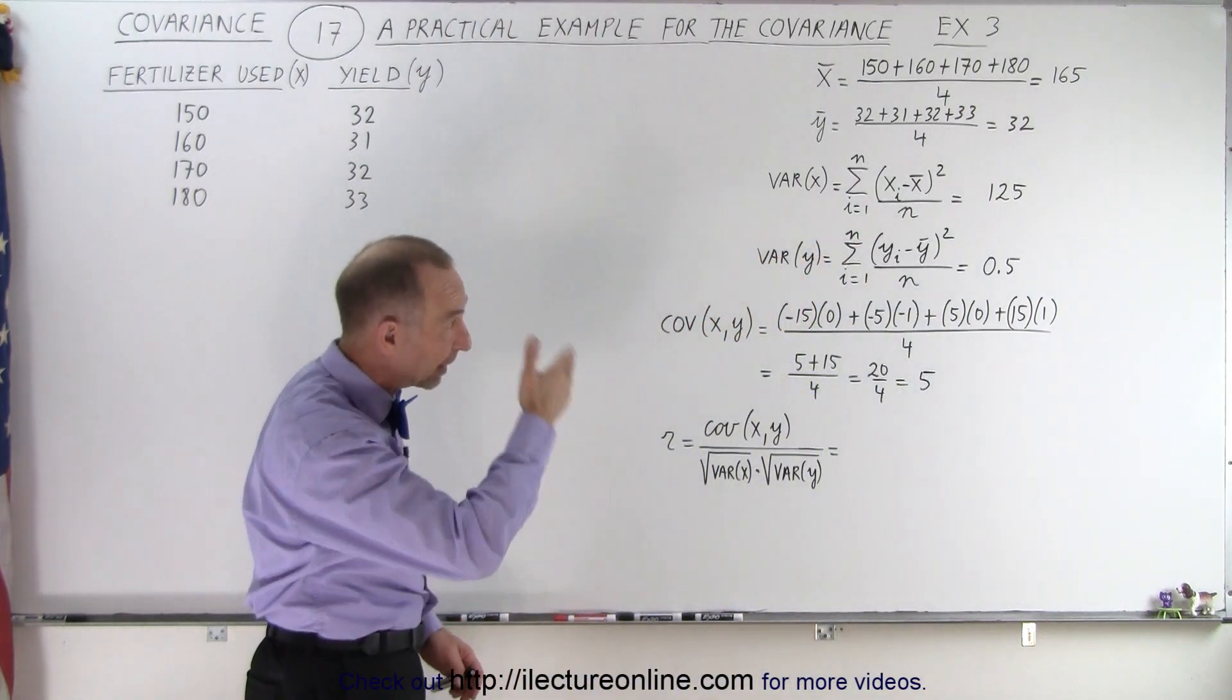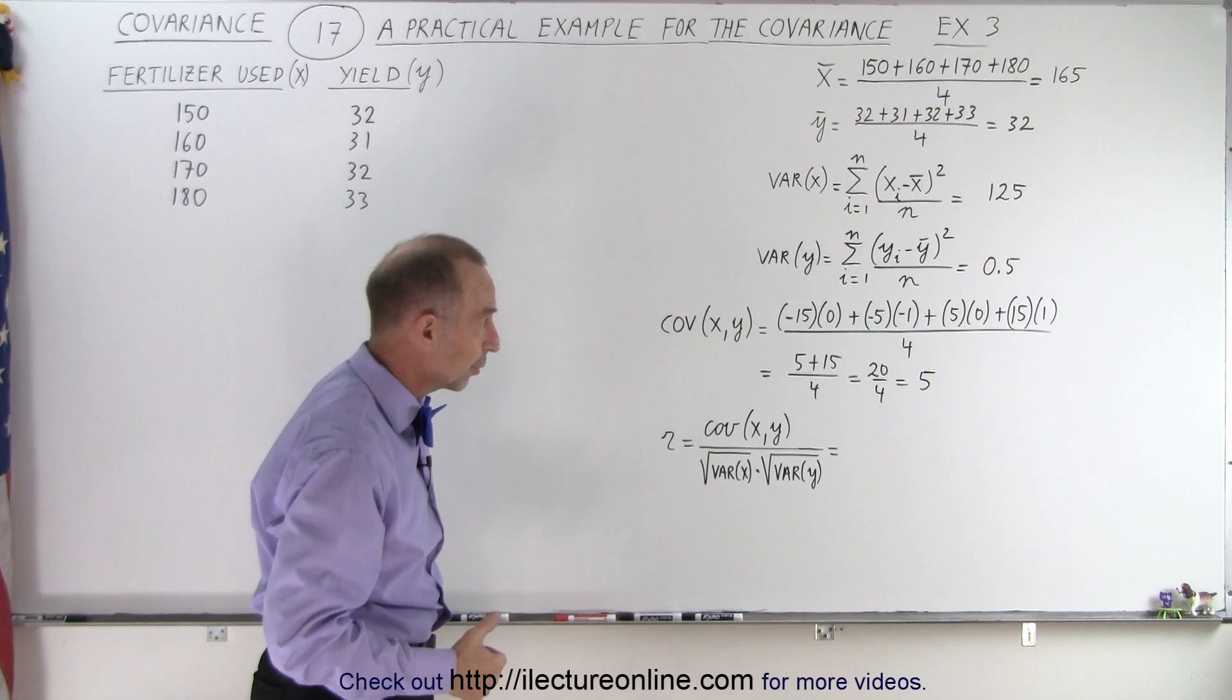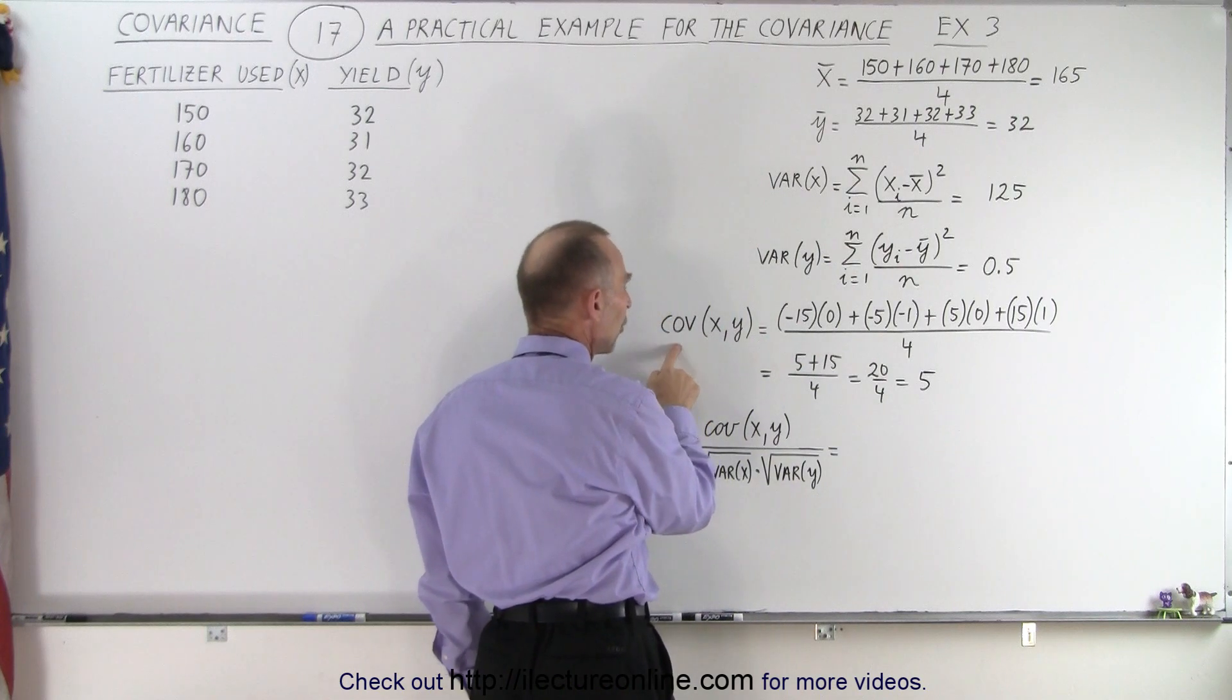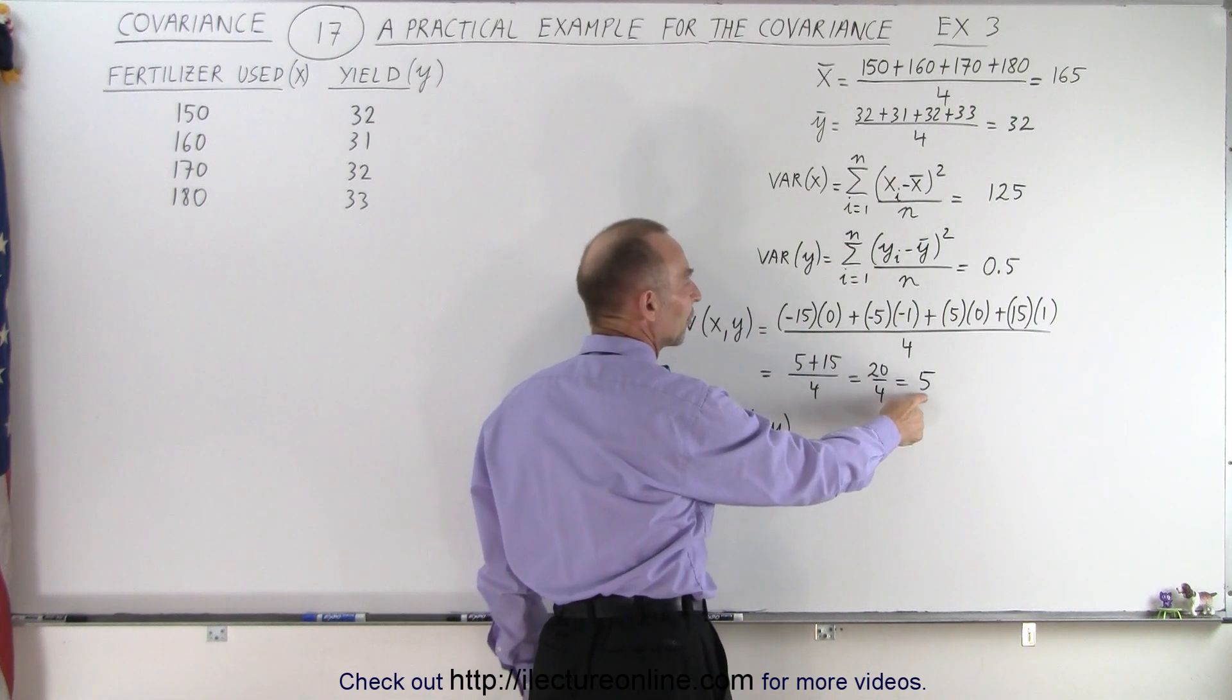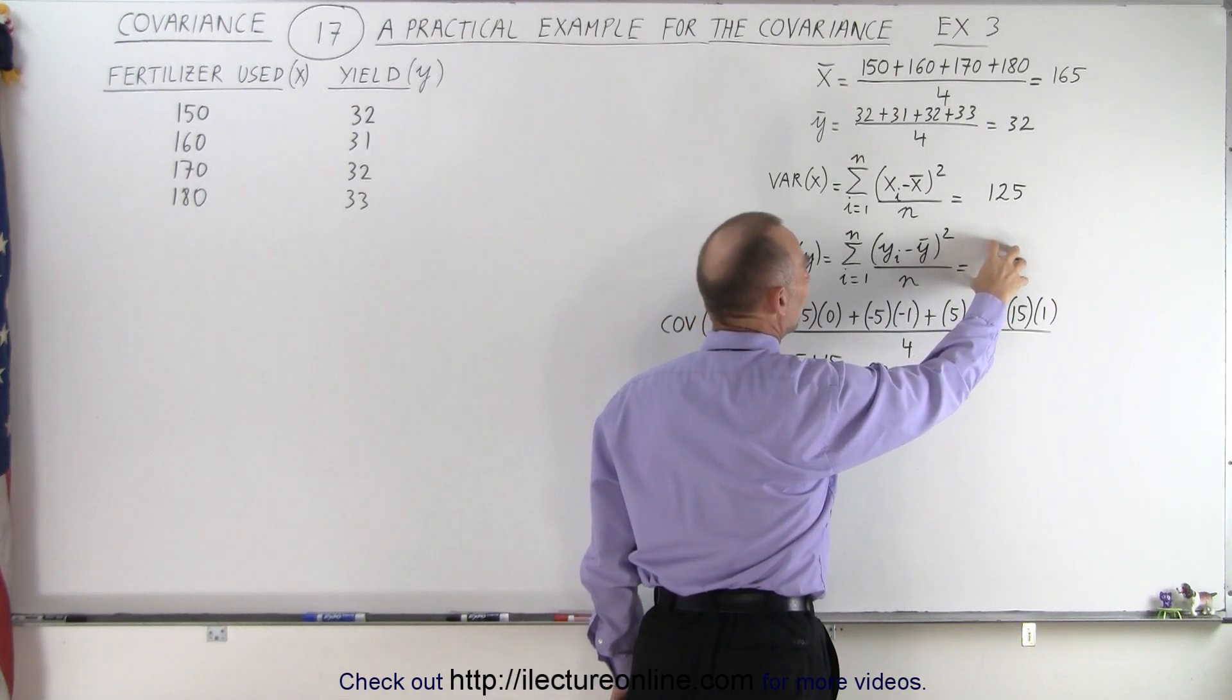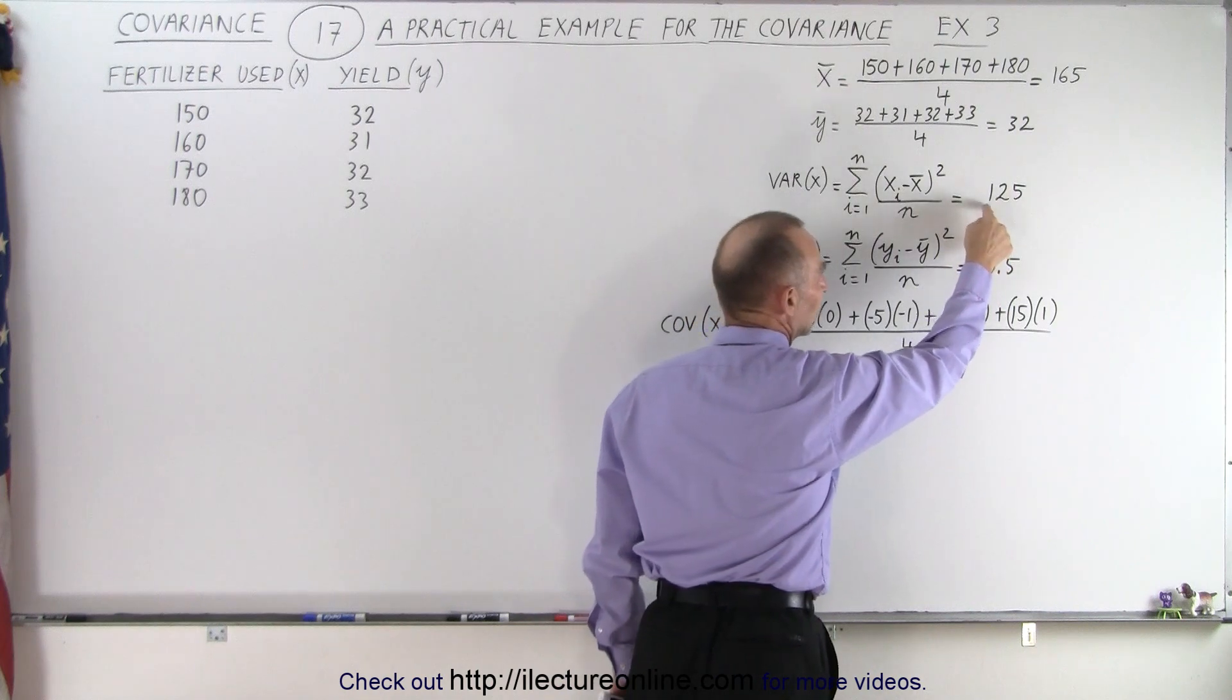And so that is definitely an indicator that something is not very efficient or there's not a lot of use in using a lot of extra fertilizer at that point. Calculating the covariance, notice we have a covariance of five. And now relate that to the variance of Y and the variance of X. It is much smaller than the variance in X.